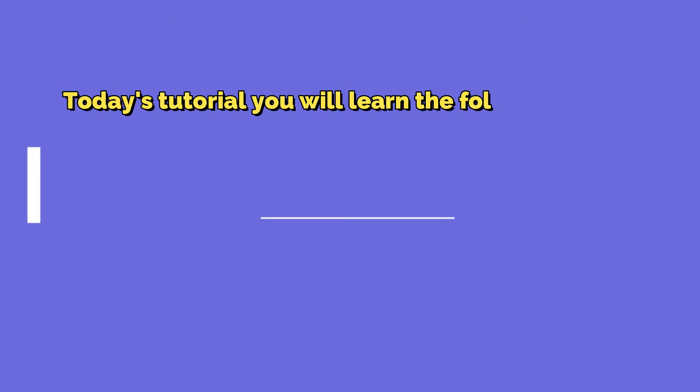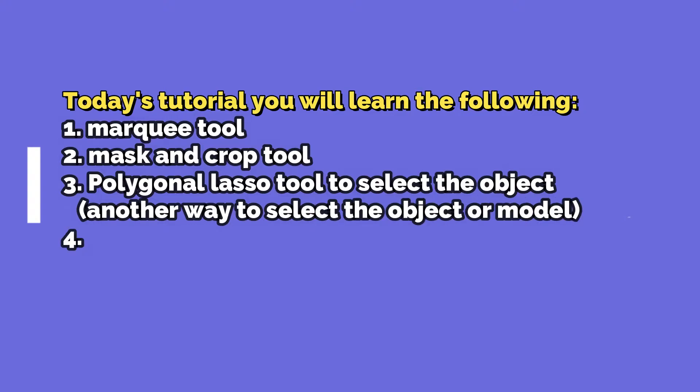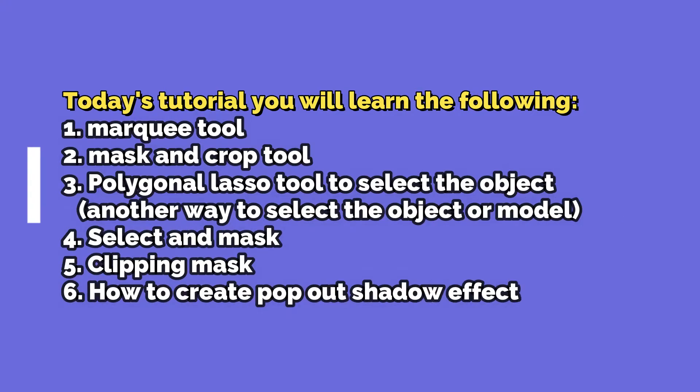In today's tutorial you will learn the following: first, the marquee tool; second, mask and crop tool; third, the polygonal lasso tool to select an object or photo — it is another way to select an object without including the background. You can still use the quick selection tool, magic wand, or even the pen tool — at the end of the day it is your own choice which one you are comfortable to use. Fourth, select and mask; fifth, clipping mask; and sixth, how to create a pop-out shadow effect or 3D effect using the brush tool.